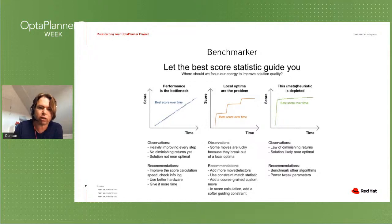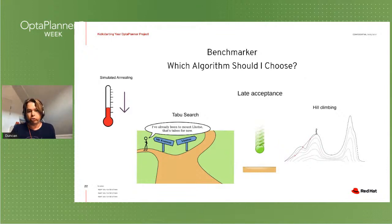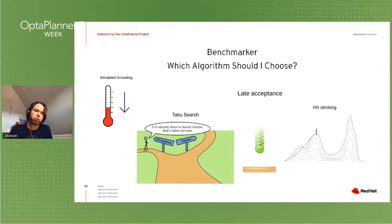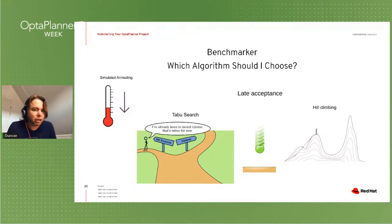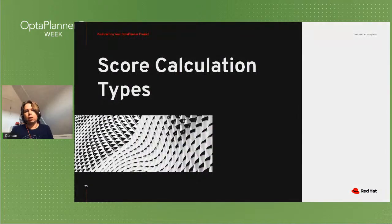The benchmarker also helps you choose which algorithm to use. OptaPlanner offers multiple meta-heuristic algorithms: tabu search, simulated annealing, late acceptance, and more. There's no silver bullet — as Duncan's grandfather in construction used to say, 'measuring is knowing.' Use the benchmarker with different data sets and configurations to pick the best algorithm for your specific problem, using production-representative data.